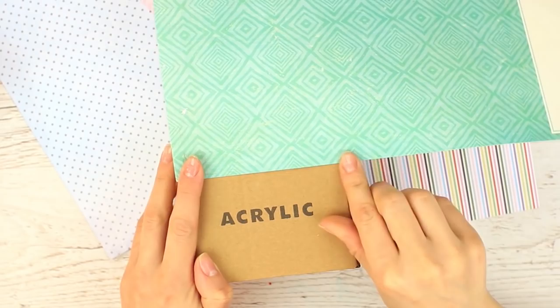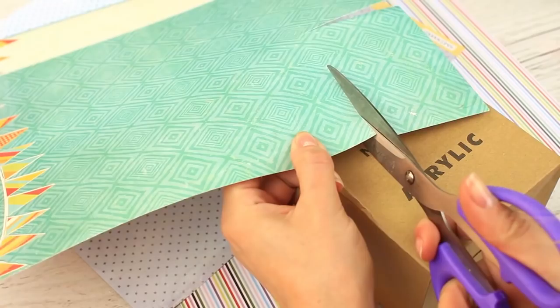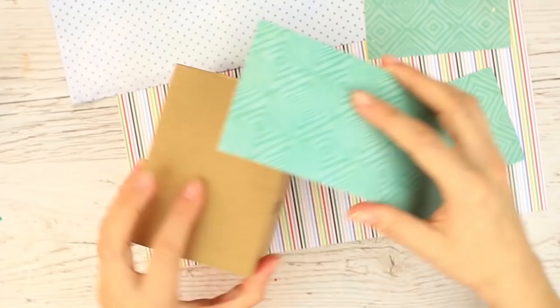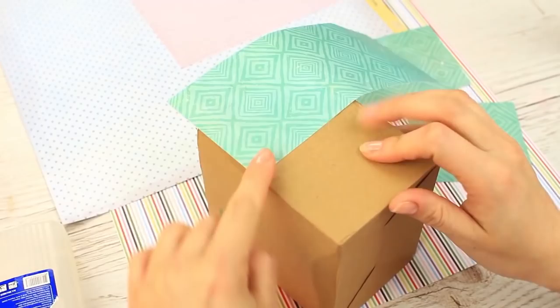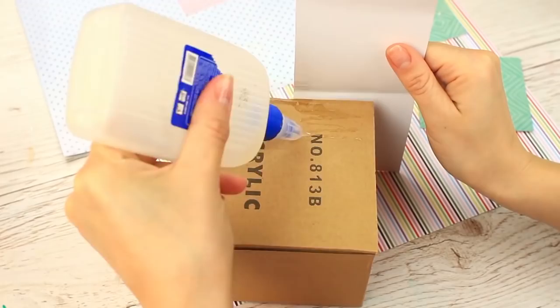Try it on to see how it fits. Cut it out about an inch higher than the edge. Try it on to see if it fits better. Apply the glue to the side. Attach the paper. Crease the corner. Continue decorating. Attach the missing part.